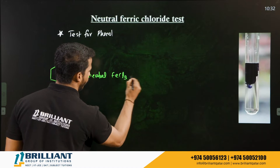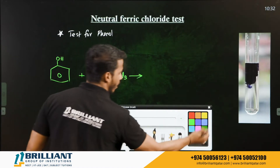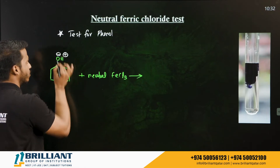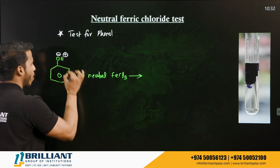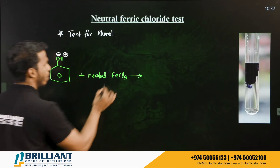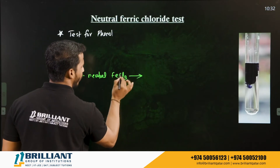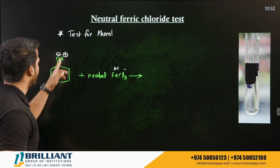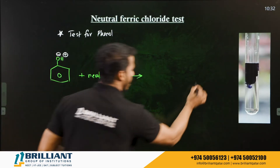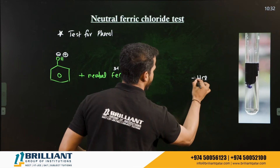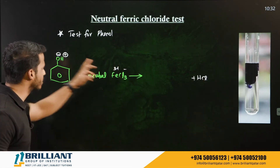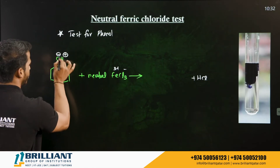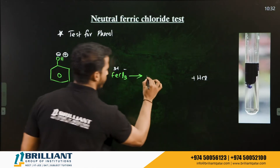When phenol is treated with neutral ferric chloride (FeCl₃), the ions present in phenol are H⁺ and phenoxide ion (O⁻). The ions in FeCl₃ are Fe³⁺ and Cl⁻. The H⁺ combines with Cl⁻ to give HCl, while Fe³⁺ combines with the phenoxide ion.